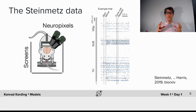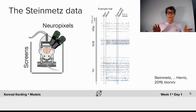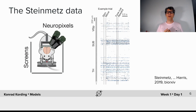What models usually start with data that we will ultimately want to describe. Today we will be looking at the Steinmetz dataset. In this experimental setup, we have a rodent with screens around it. The rodent can get reward, and the rodent is also moving. While all that is happening, we record the activity of neurons in the brain of that rodent.